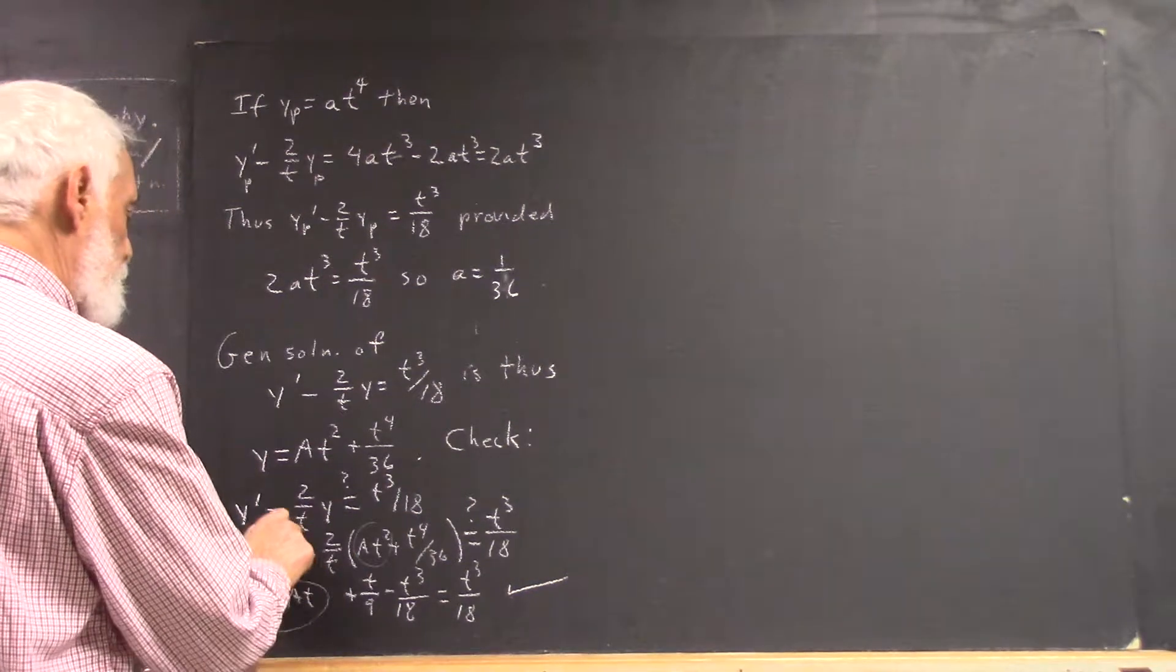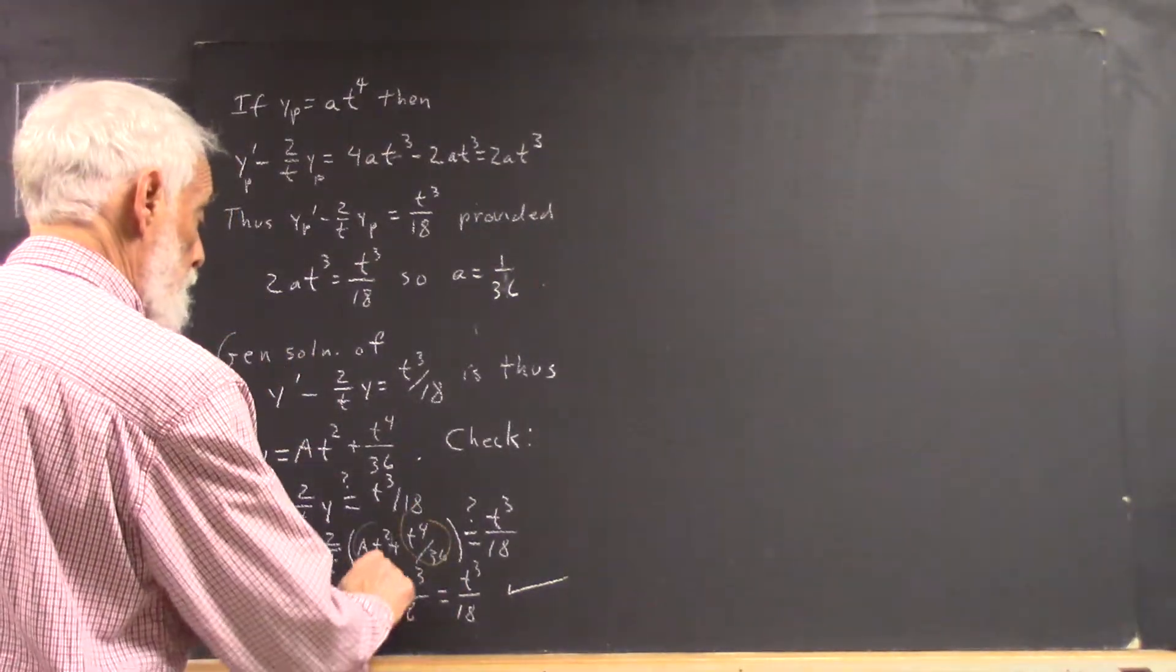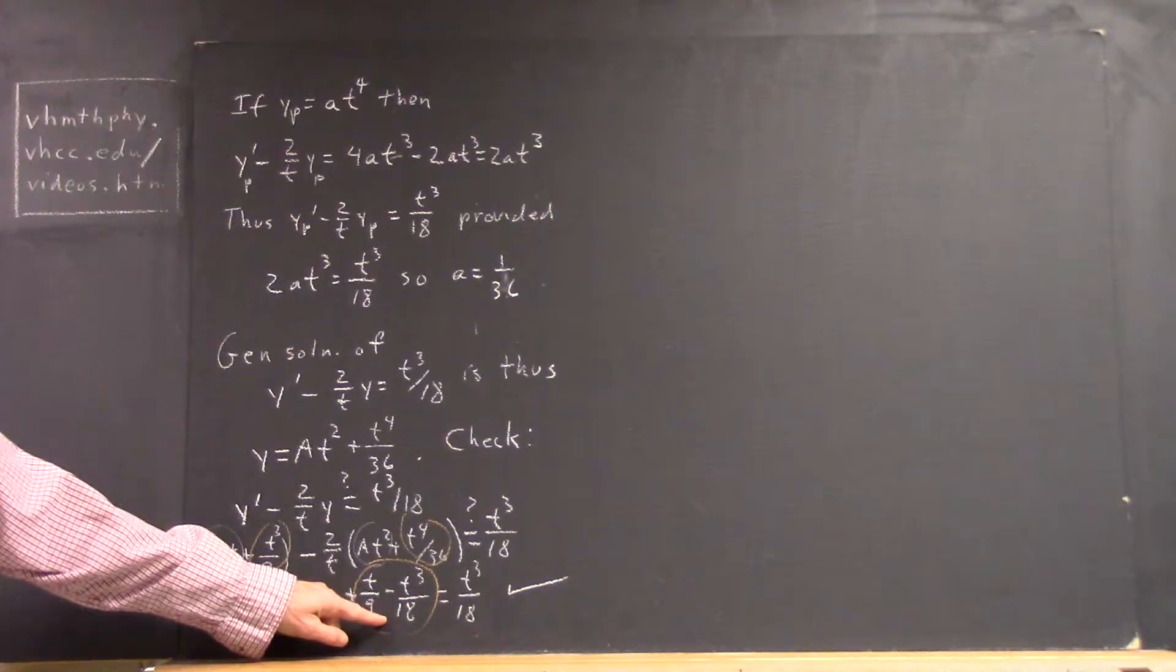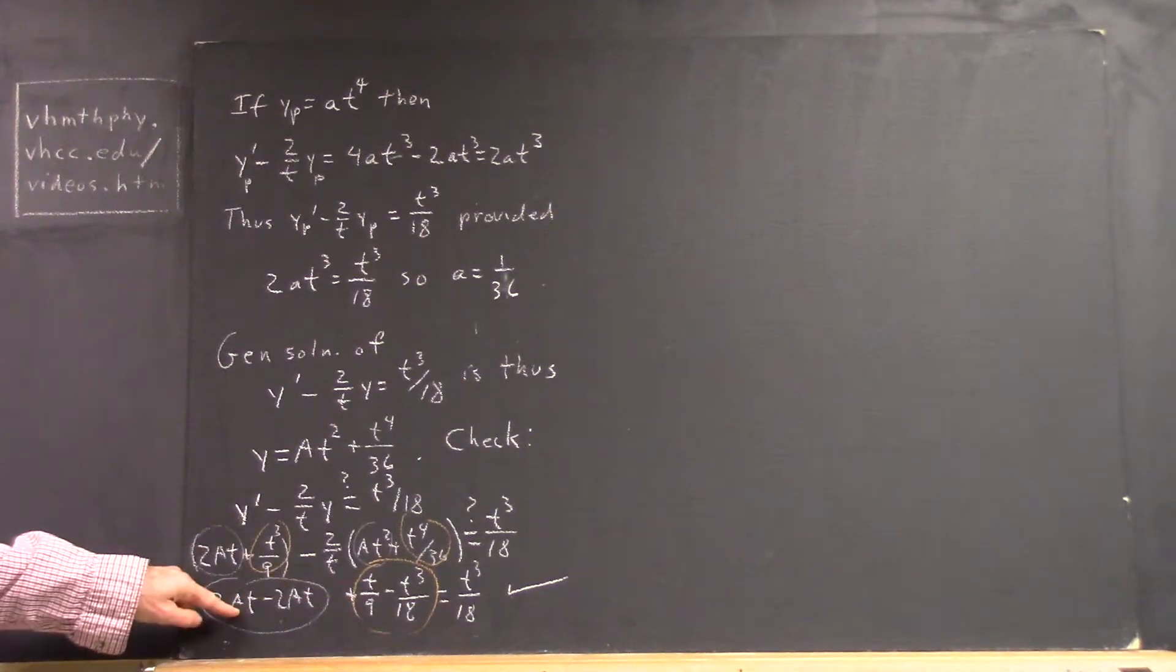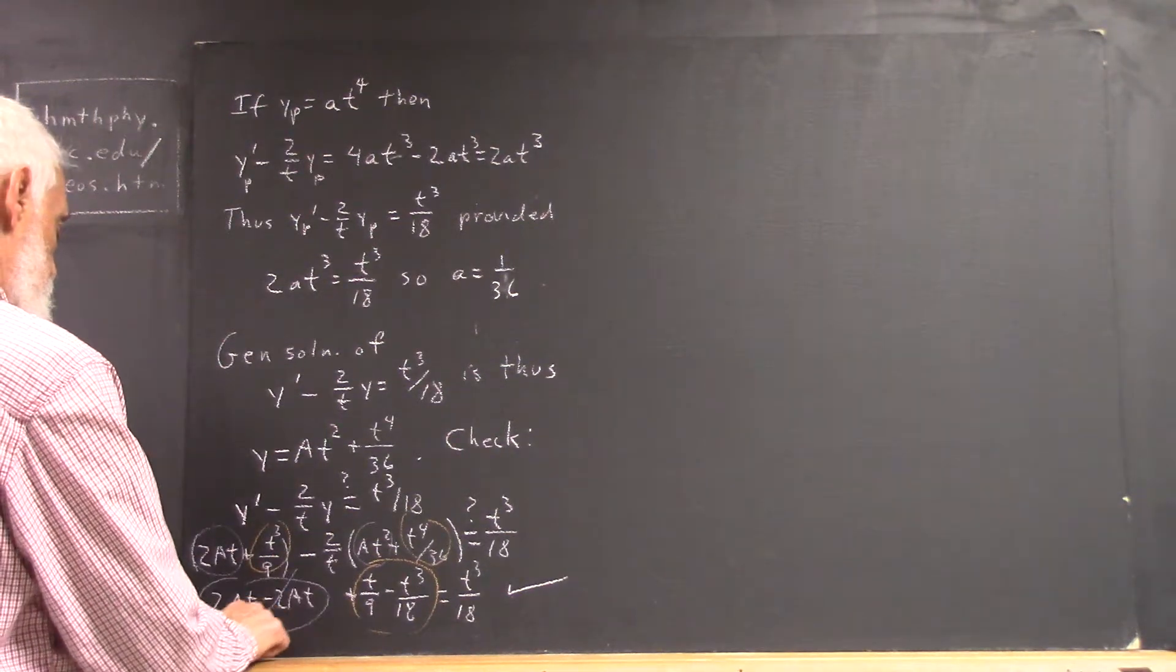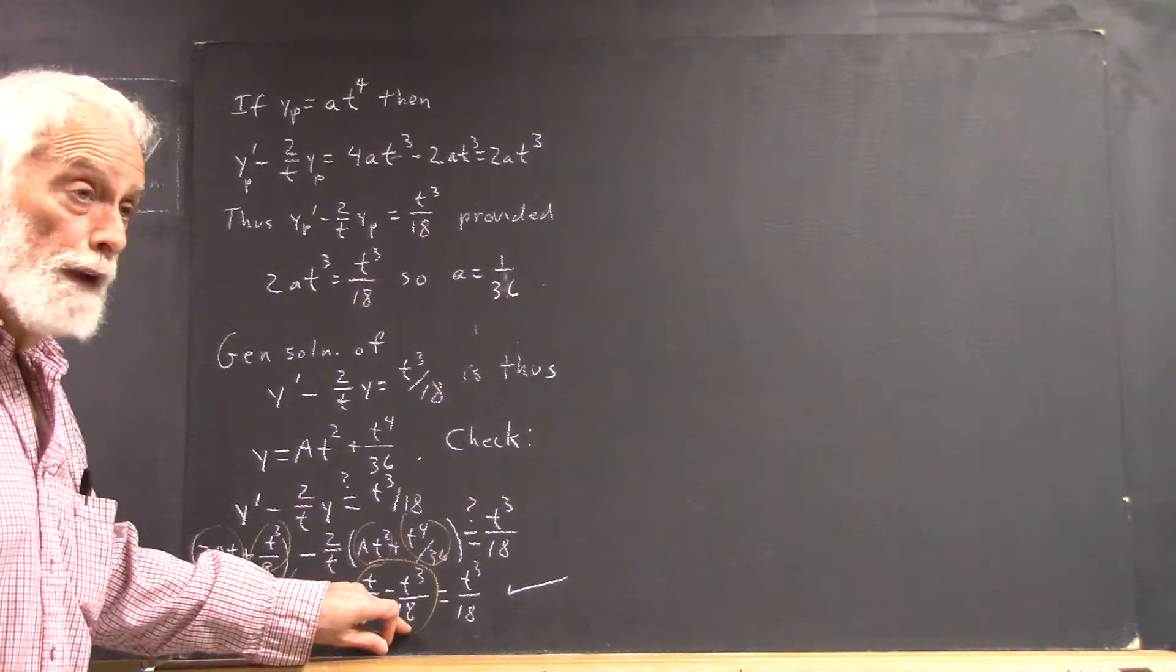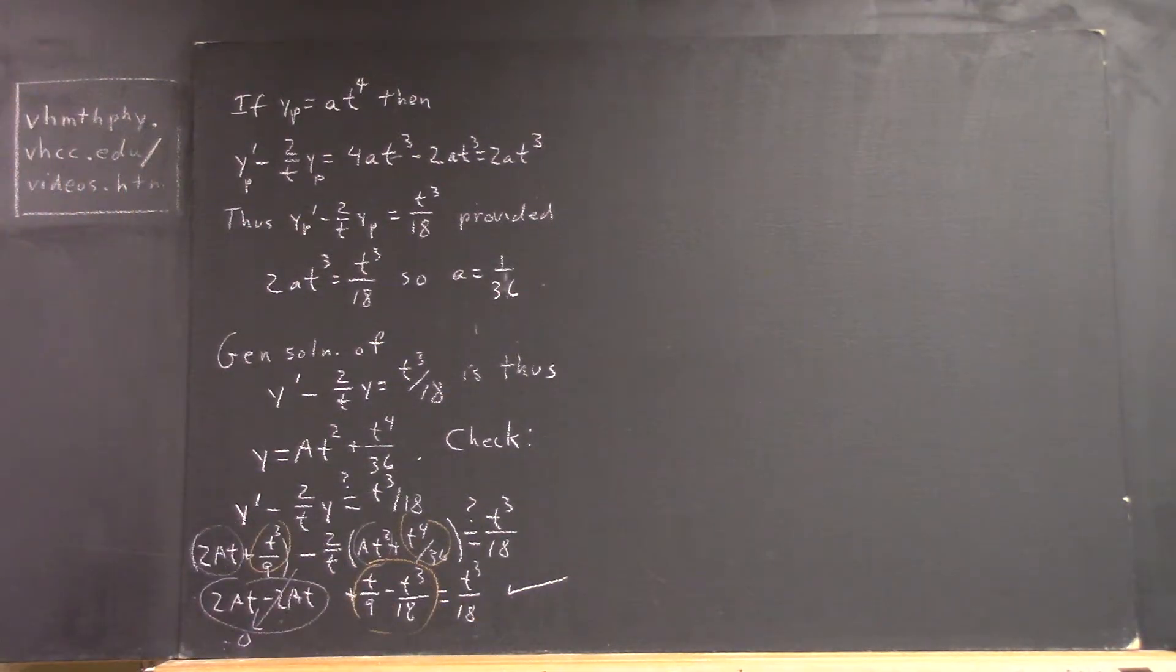So this comes from this term and this term, which came from your y particular. Right there is the part that comes from your particular solution. This is 0. And this is what's left over from your particular solution, and it checks out.